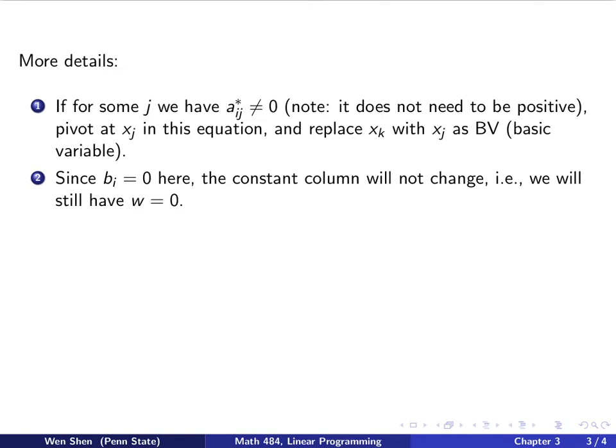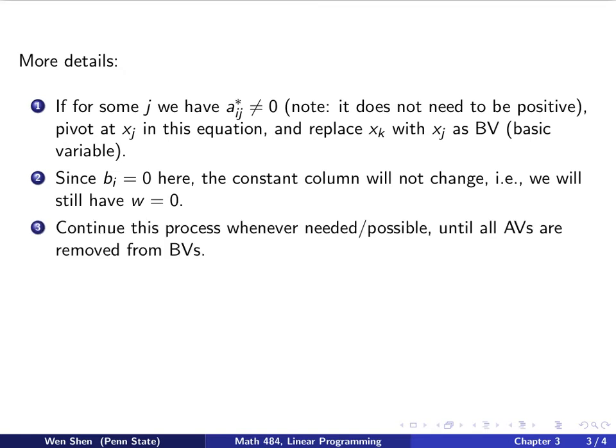Now what will happen if you do this pivoting? Well, you know bi has to be 0 on this equation, because of what we just discussed that, right? Then that means the constant column will not change. That means the value of W will not change after you perform the pivoting. W will still be 0, which is its minimum. If after you have done this step, for some reason, you still have some artificial variable in the basic variable set, then you can continue the step 1 and 2 of the process until you have removed all the artificial variables in the basic variable set.